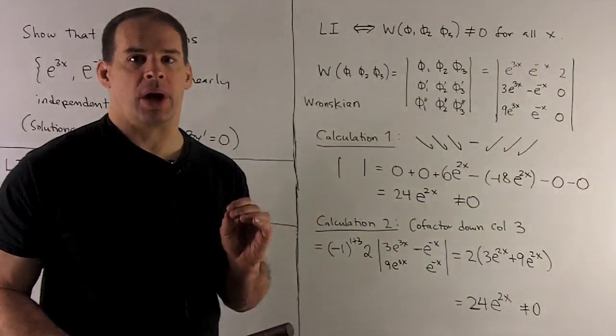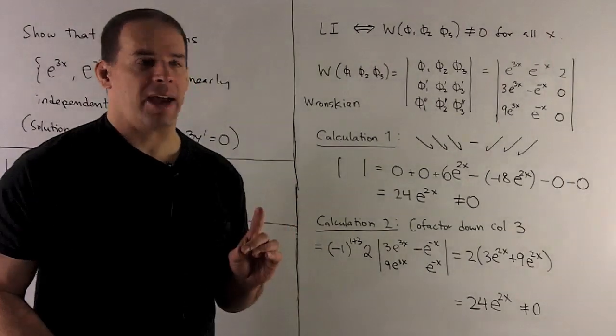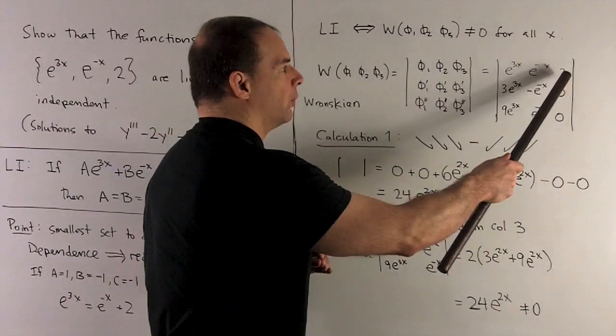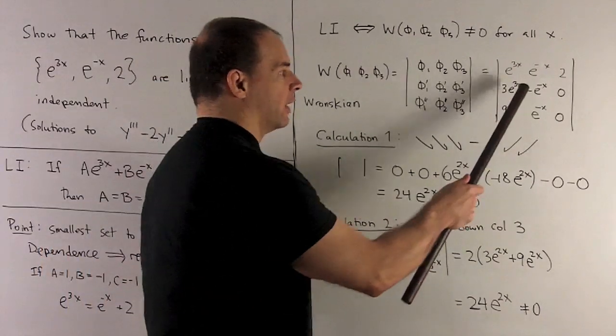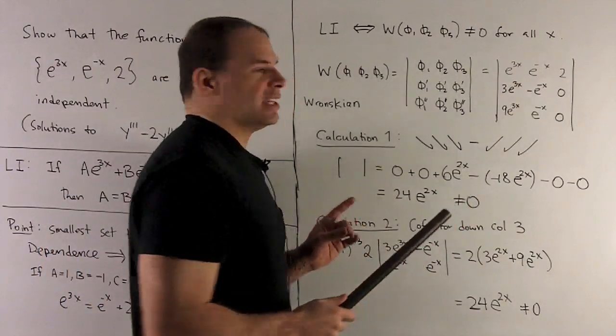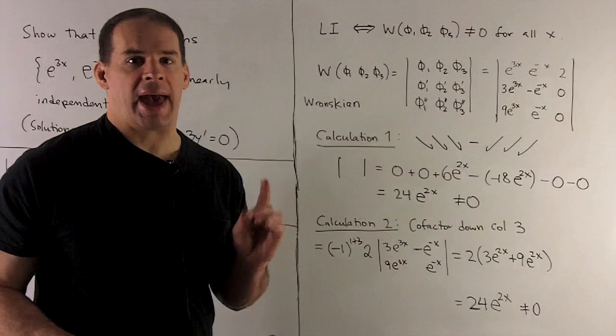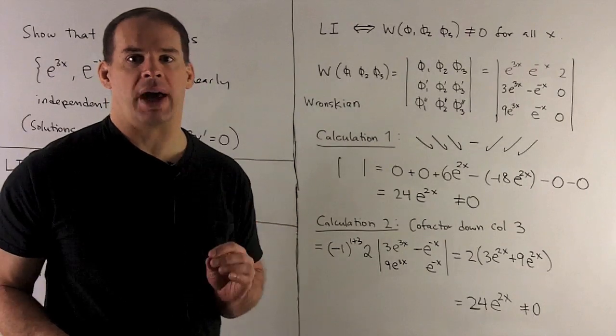Going to the left, again I'll be off the 2, so the minus signs, because we're going to subtract, they'll cancel. Then I'll have 18e^(2x). We add, we get 24e^(2x).